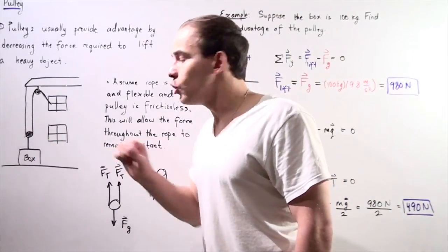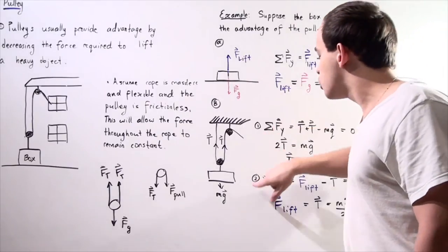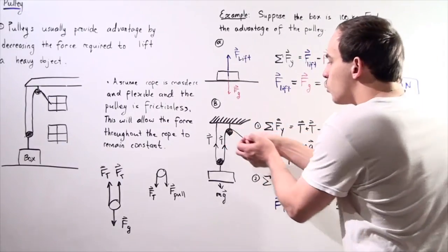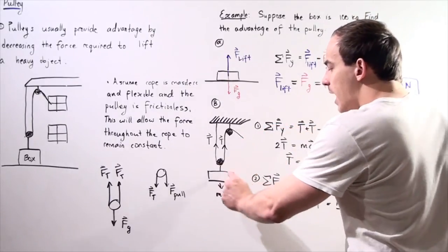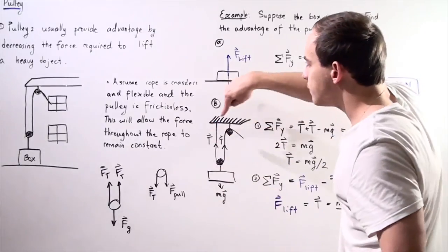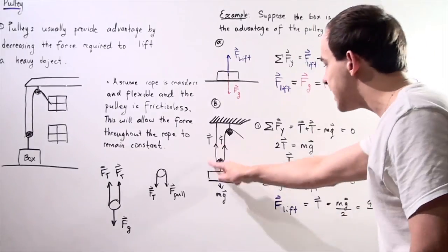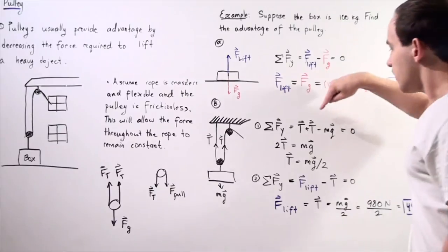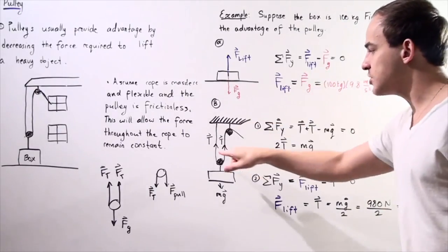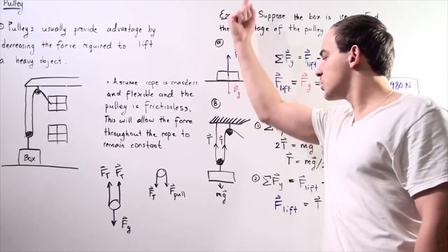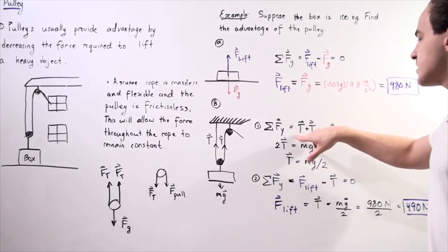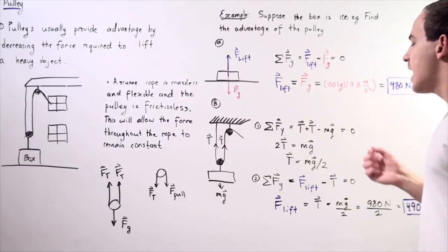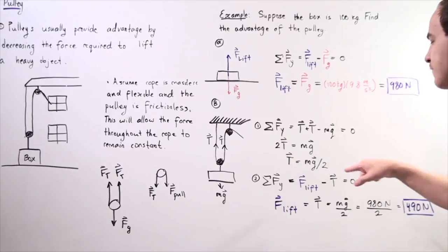Now for the pulley system, we set up two equations — one for each side. On the box side, we have two tension forces acting upward and gravity acting downward. Taking upward as positive: tension plus tension minus mg equals zero, which gives us two tensions equal to mg. Therefore, tension equals mg divided by 2, which is one half of mg.